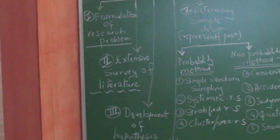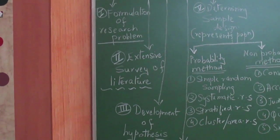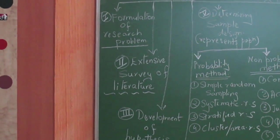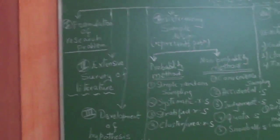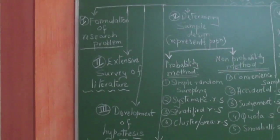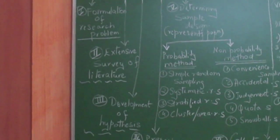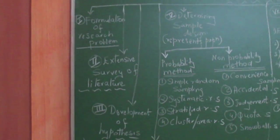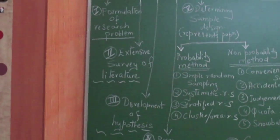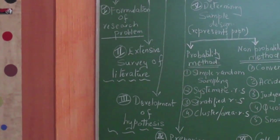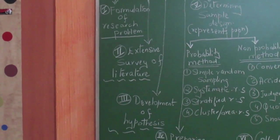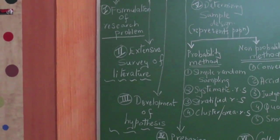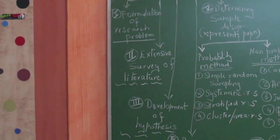The first point says formulation of research problem. Whenever one wants to do research, the first thing is to find out what you want to do research on. You may select it, or if you are part of a research team, you will be sent to research and find a solution for a problem. So the first point is formulation of research problem.